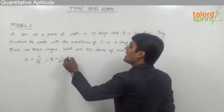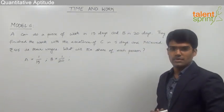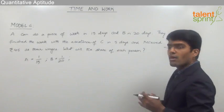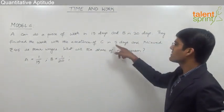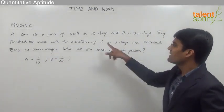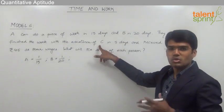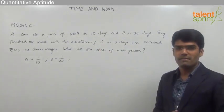Now we also need to find out the number of days required by C alone to get the answer for this question. So let us look at how to get the answer there. The next statement here is they finish the work with the assistance of C in 5 days. That means A and B together with the assistance of C, all the three persons now are working together and they finish the work in 5 days.